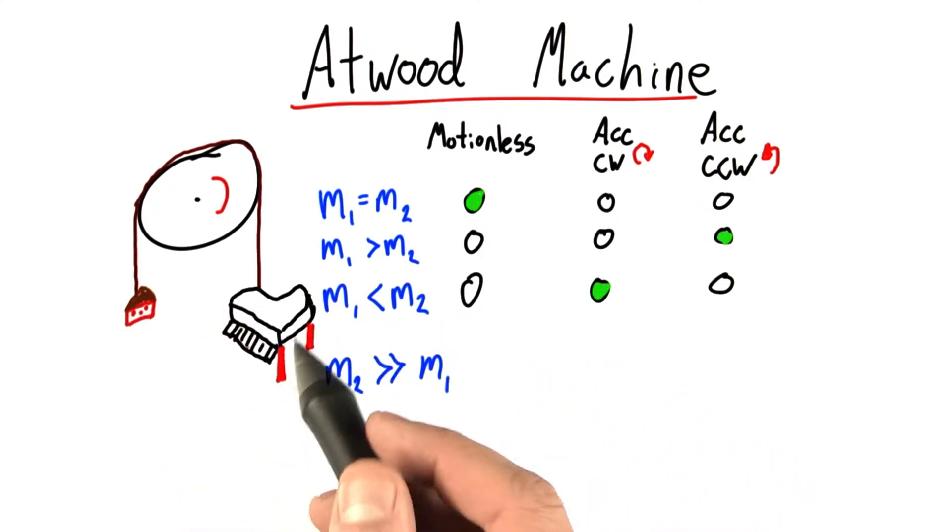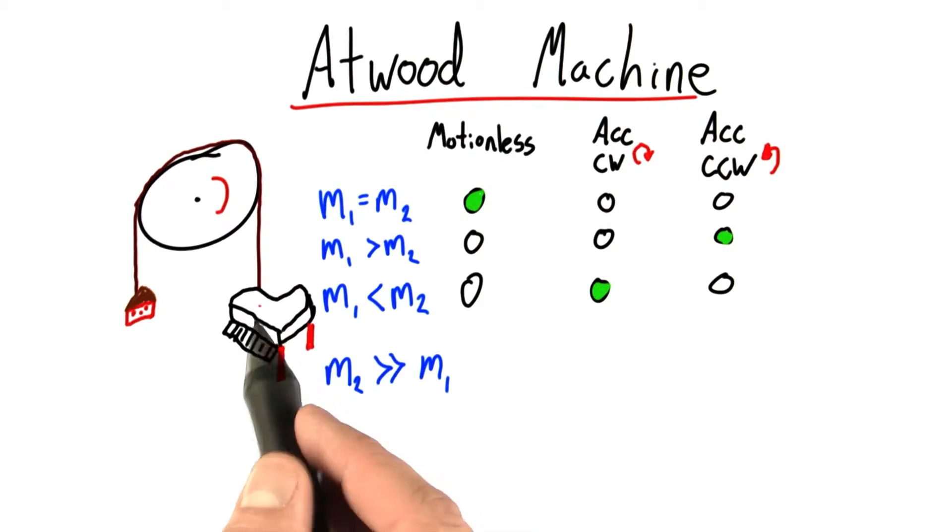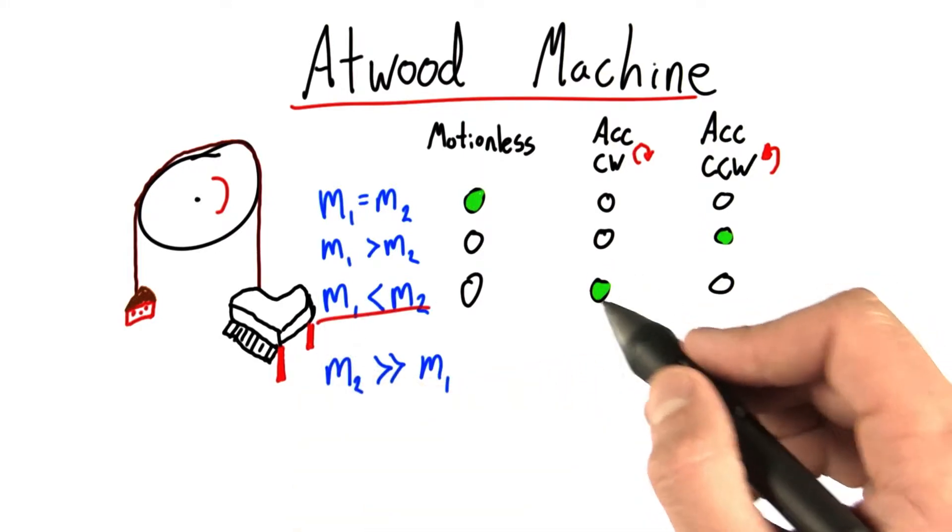We can push nature to its limits in our head, and we never have to set up this experiment. We just have to think, what's going to happen? Well, we already know that when M2 is greater than M1, the system accelerates clockwise, of course.